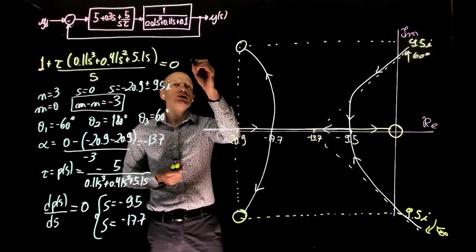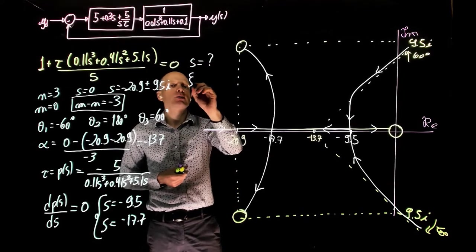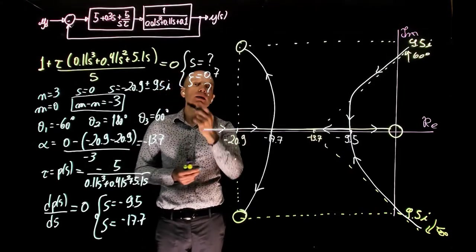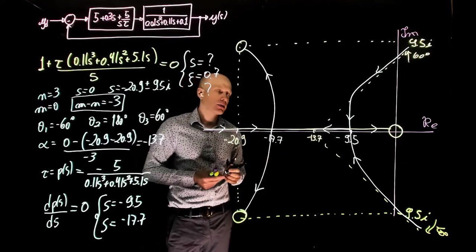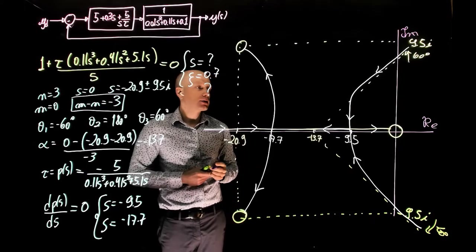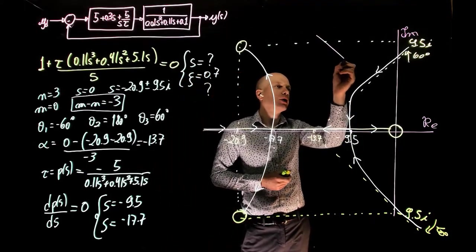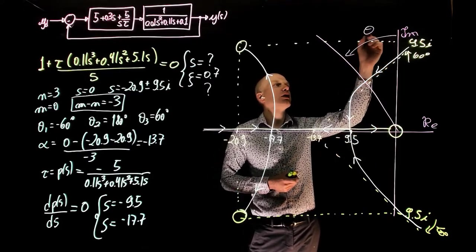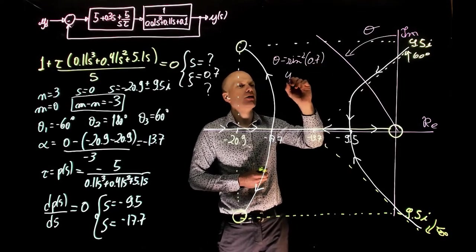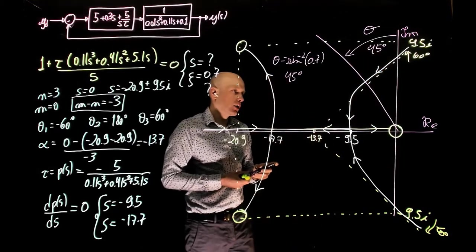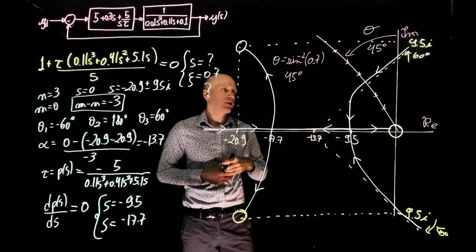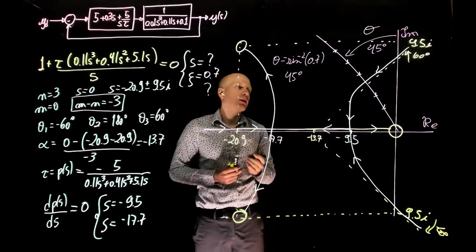The question is: what value of s — the location of the poles — gives a damping ratio of 0.7? And what is the corresponding value of tau? We need to locate the complex dominant poles on the root locus with damping ratio 0.7. A damping ratio of 0.7 means the pole lies on a line forming an angle theta with the imaginary axis, where theta equals sin⁻¹(0.7), which is 45 degrees. Any pole along this 45-degree line has a damping ratio of 0.7.